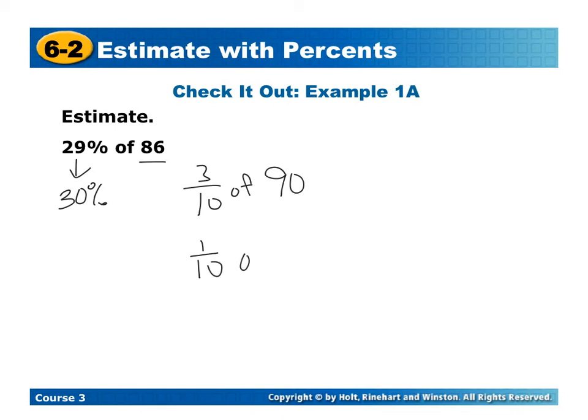So here, first I'm going to find 1 tenth of 90, which is going to be 9. But then, since we have 3 parts, I'm going to multiply it by 3, and I get 27. So here, our answer would be around 27.